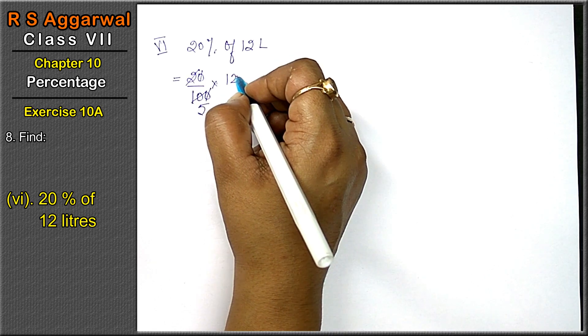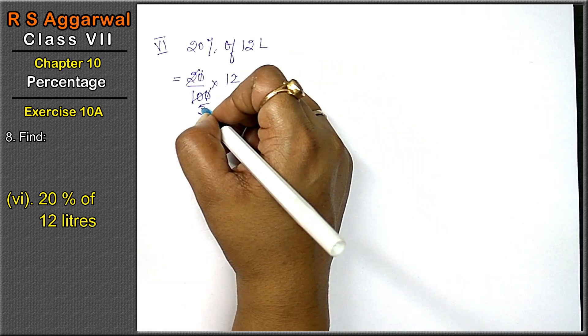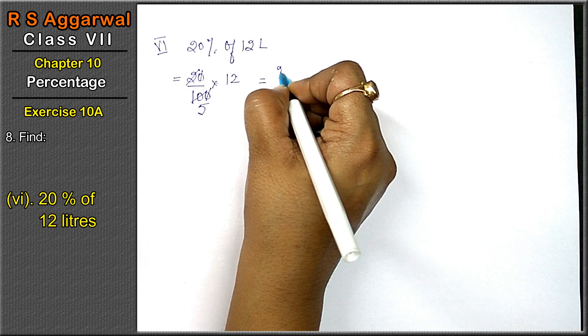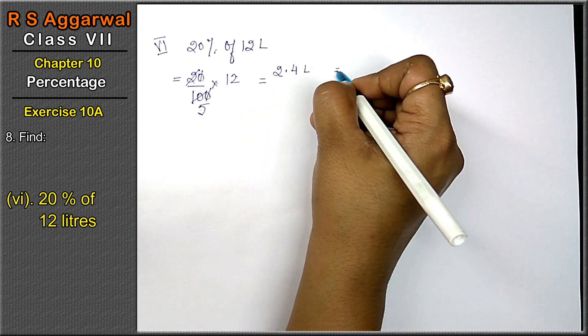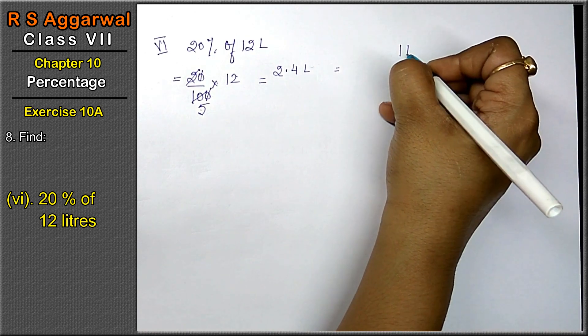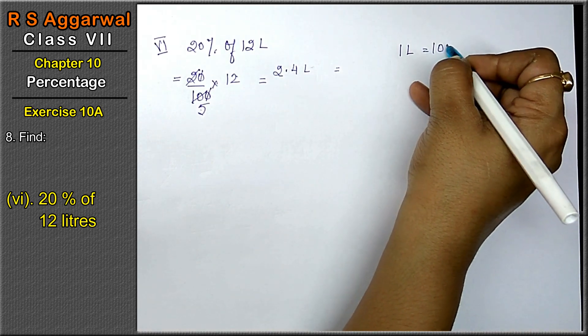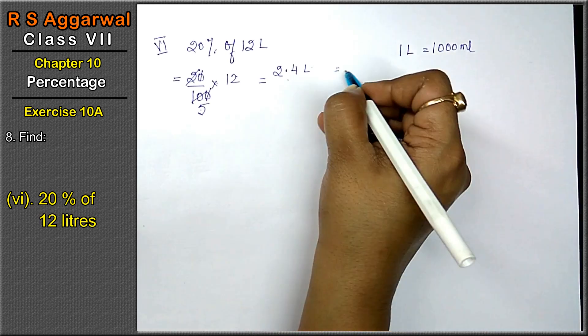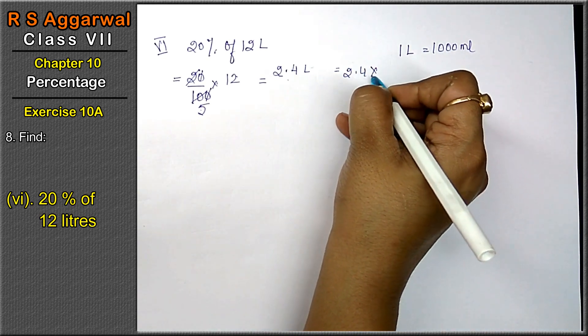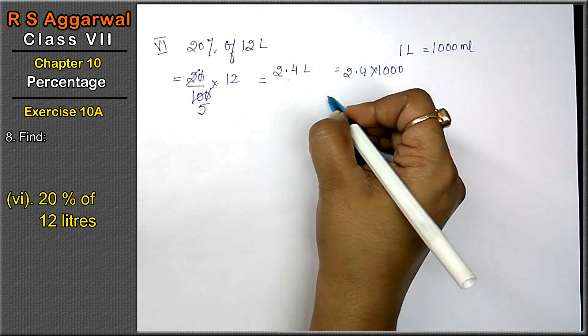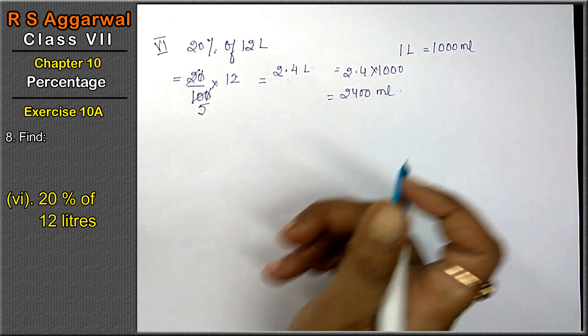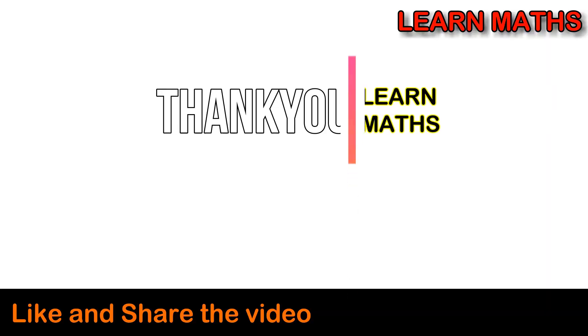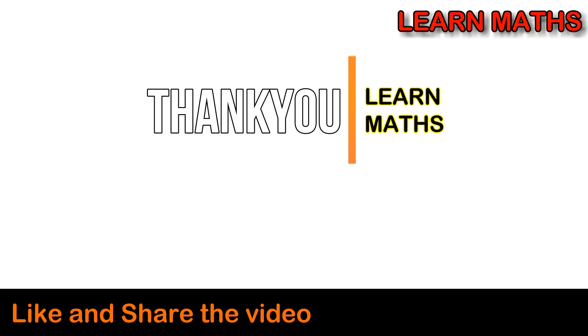Friends, if we want, we can calculate this in liters or milliliters. In liters it would be 2.4 liters. If we want milliliters, we know 1 liter equals 1000 milliliters, so multiply this value by 1000. The answer becomes 2400 milliliters.